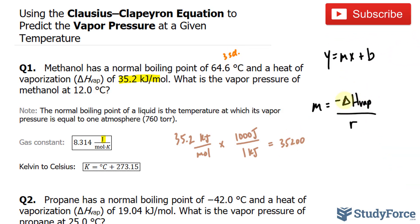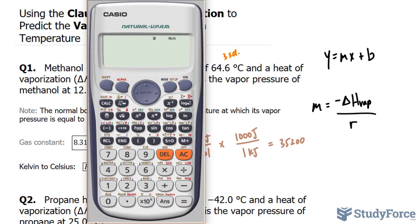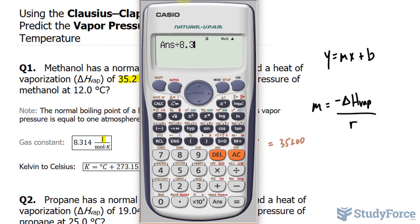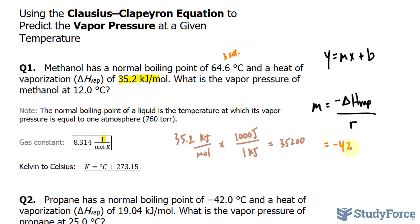I'll substitute this value right in here so I can find the slope for my equation. The reason why I'm finding the slope is because this will help us eventually find the vapor pressure of methanol at 12 degrees. We'll take 35,200 times negative 1, divided by the gas constant 8.314, and we end up with negative 4,233.82.